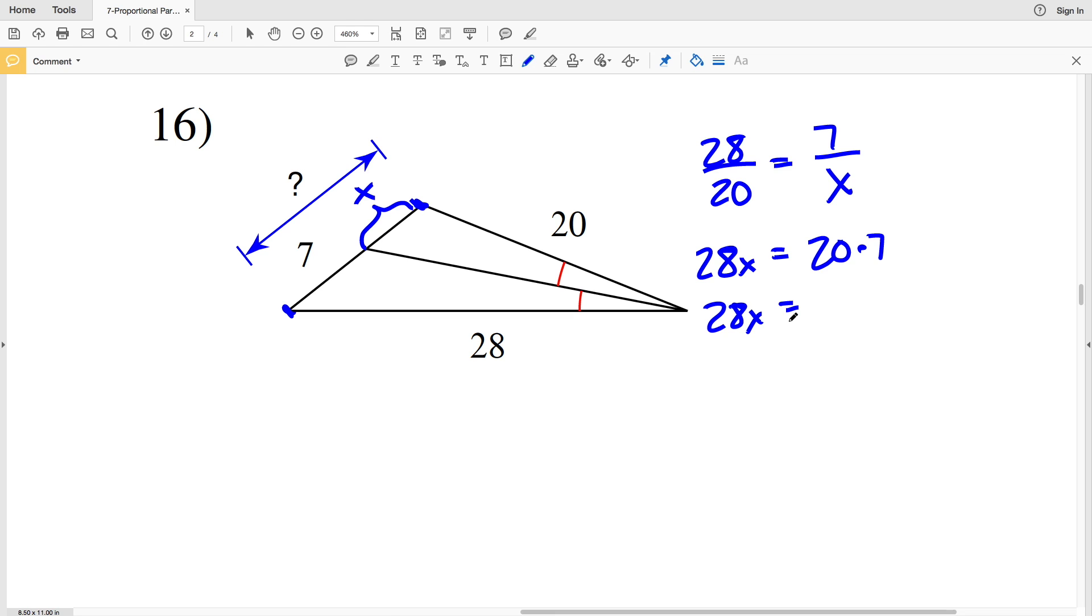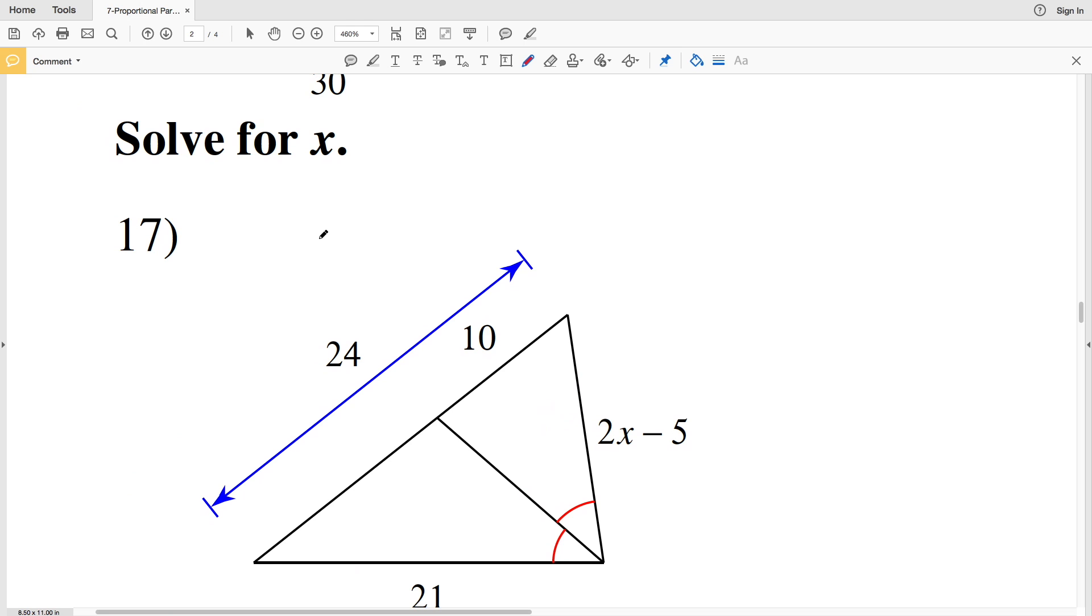So 28X equals 20 times 7, which is 140. And when we divide by 28, X will be equal to 5. So X is 5, but we're solving for this indicated length, which is 7 plus X. So 7 plus X equals our indicated length, and that's 7 plus 5, since X is equal to 5. And 7 plus 5 is 12. So our missing length in number 16 is 12.